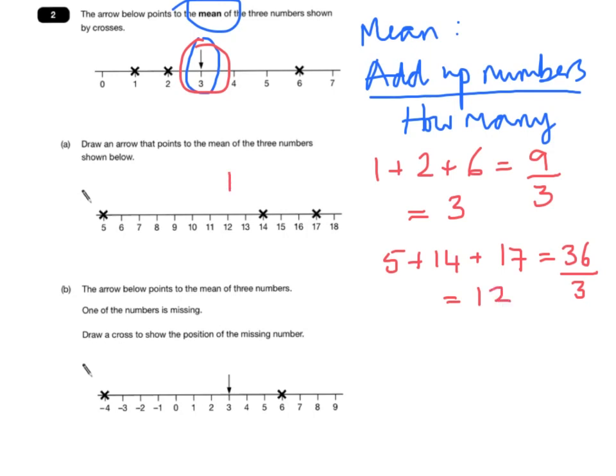Check the question carefully. It says, draw an arrow that points to the mean of the three numbers. It needs to be an arrow.